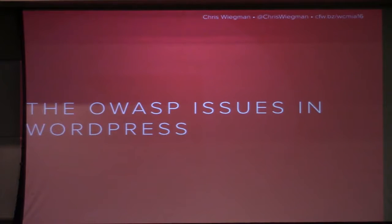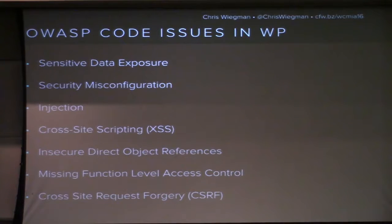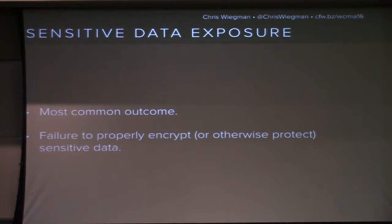The OWASP project — I've gone through and picked the vulnerabilities that specifically target WordPress. This is an overview: sensitive data exposure, security misconfiguration, injection, cross-site scripting, insecure direct object references, missing function level access control, and CSRF or cross-site request forgeries. Most of these are very developer-centric, but you don't have to be a developer to create or take advantage of a vulnerability. This top one is simply the most common one we're going to see in WordPress.